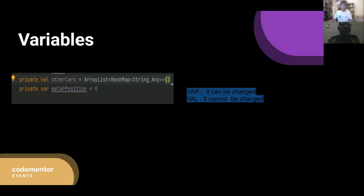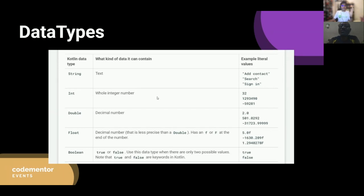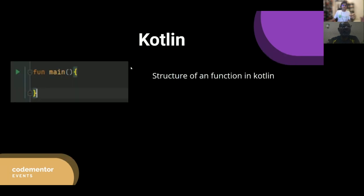Moving to data types — they are similar to Python, Java, and other languages. You have String, Integer, Double, Float, and Boolean, exactly the same as in other programming languages. If you have experience in another language, it is easy to understand Kotlin. If you have some experience in Java, Kotlin is very similar. The structure of a function in Kotlin uses the 'fun' keyword followed by the function name and parentheses — that's how you create a function in Kotlin.